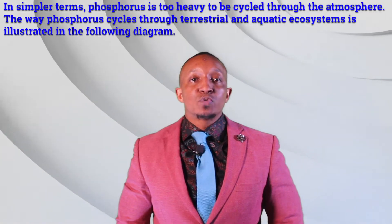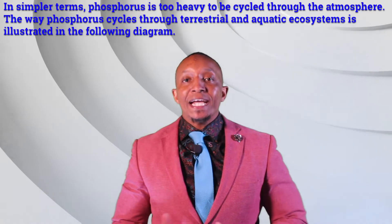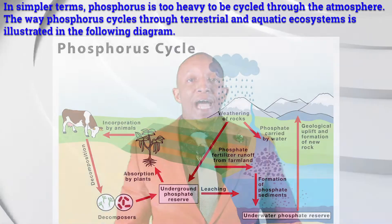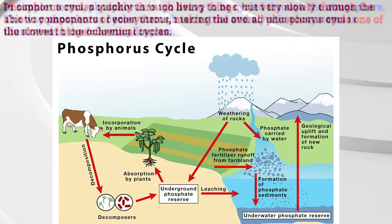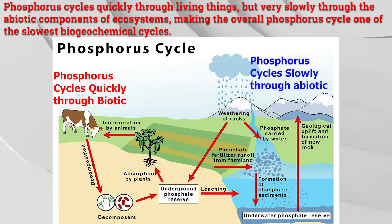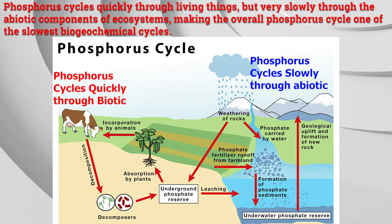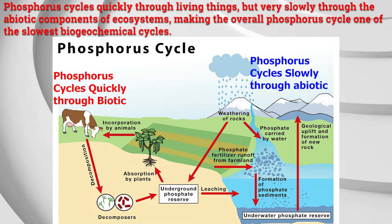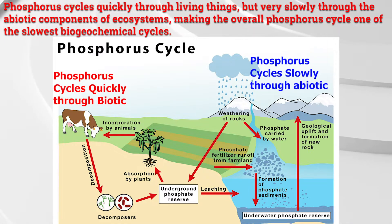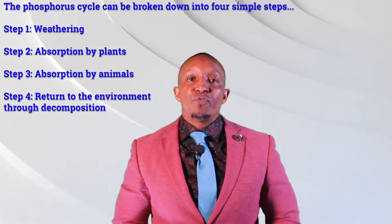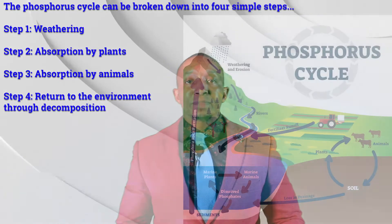The way phosphorus cycles through terrestrial and aquatic ecosystems is illustrated in the following diagram. Phosphorus cycles quickly through living things, but very slowly through the abiotic components of ecosystems, making the overall phosphorus cycle one of the slowest biogeochemical cycles. The phosphorus cycle can be broken down into four simple steps.